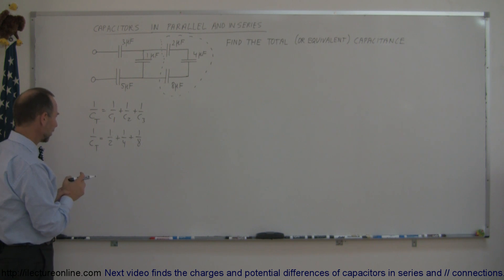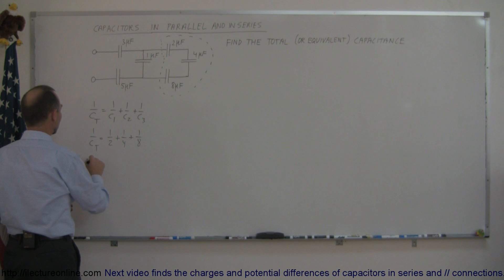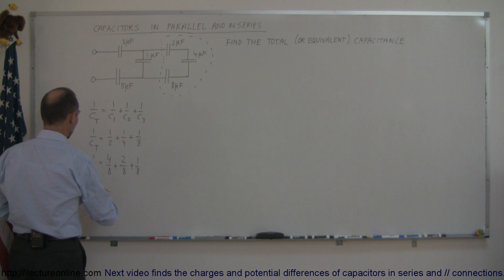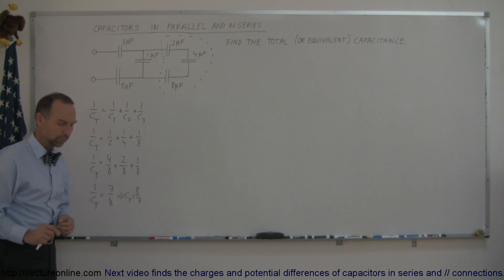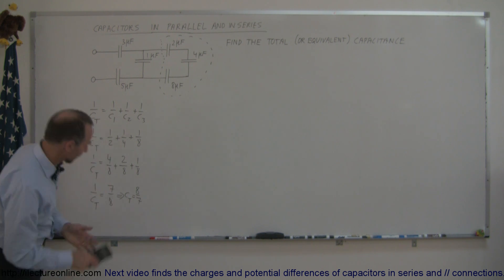We can work this out without a calculator. The common denominator is eight, so one over C total equals four over eight plus two over eight plus one over eight. One over C total equals seven over eight, which means C total equals eight over seven.